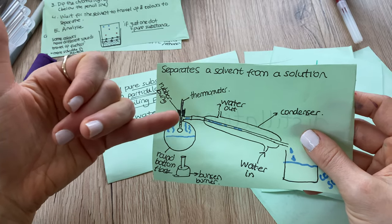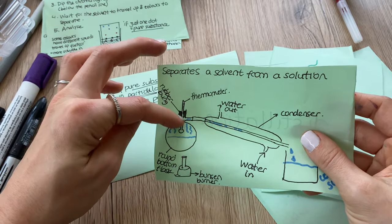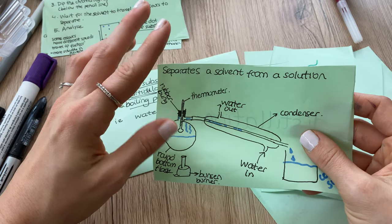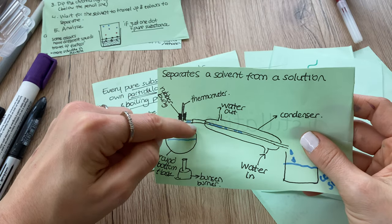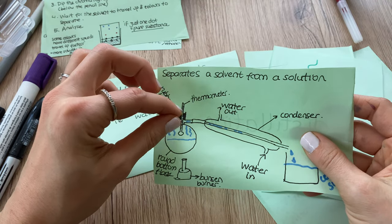So we said that if we had ethanol and water, ethanol is around, is way less, it's around 78 if I'm not mistaken. So its boiling point is way lower than water, water is 100.